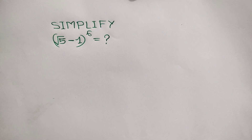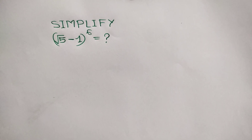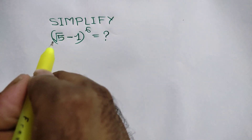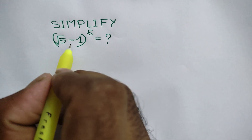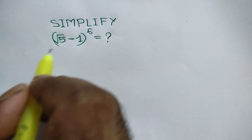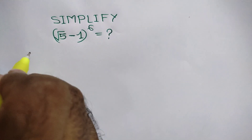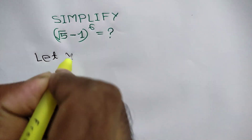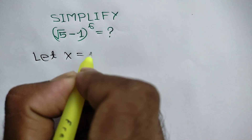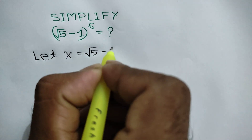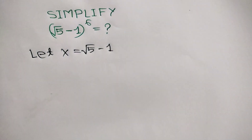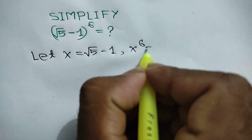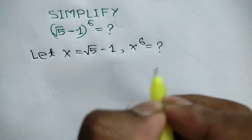Hi everyone. In this video I am going to show how to simplify this math olympiad problem: square root of 5 minus 1 to the power 6 is equal to what. Firstly, let x equal to square root of 5 minus 1, so we are finding out what x to the power 6 equals.